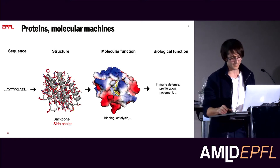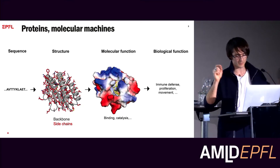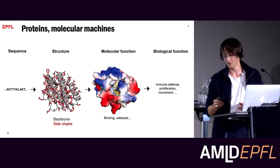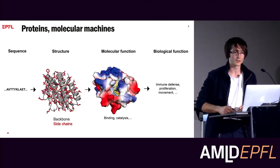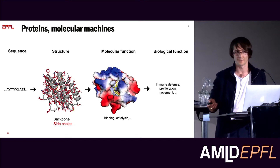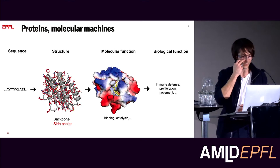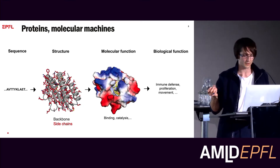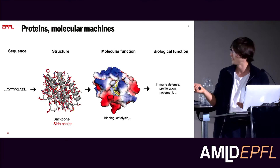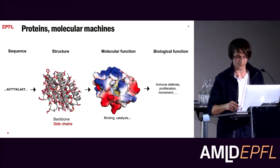Here the backbone of the sequence is in gray and the side chains are in red. It's really that three-dimensional structure — the specific position of the atoms in space — that gives rise to the molecular function of the protein, such as binding of a small molecule or an enzymatic site for catalysis. If you have multiple of those molecular functions, what you get is a biological system, such as immune defense, antibodies, proliferation, muscle movements, and so on.